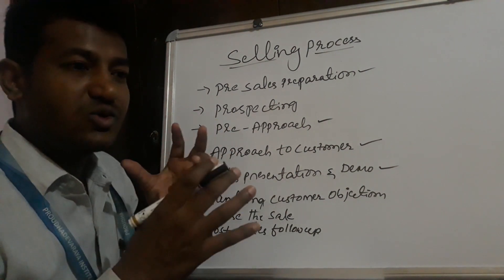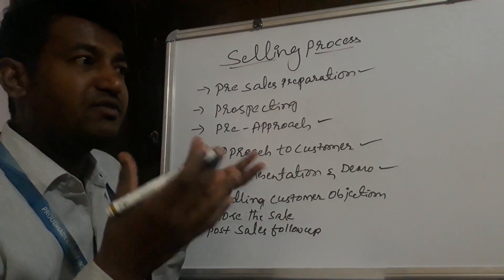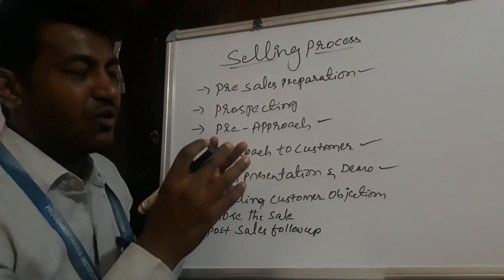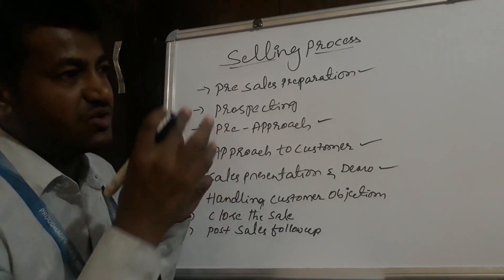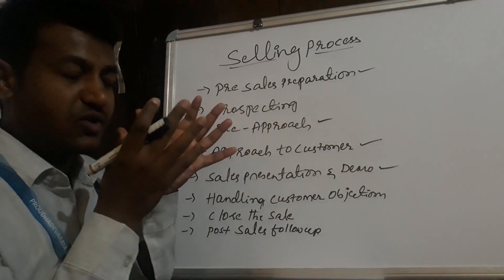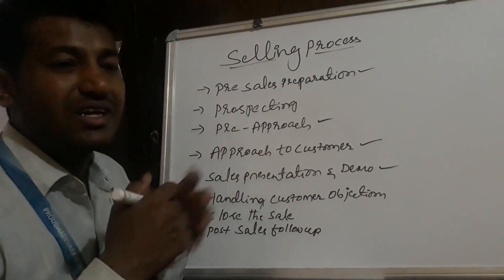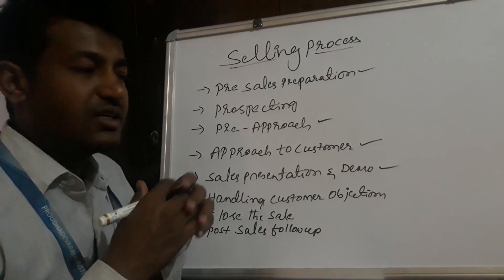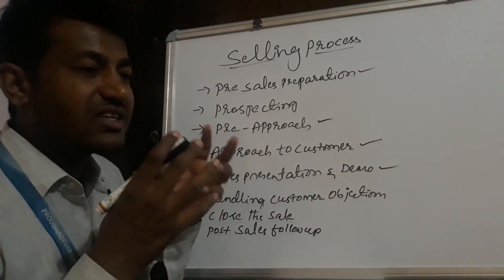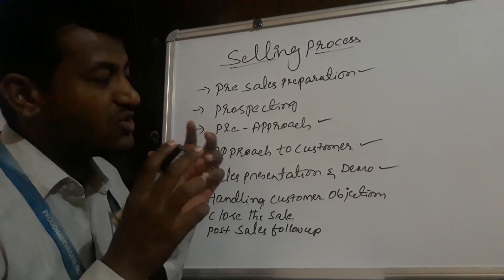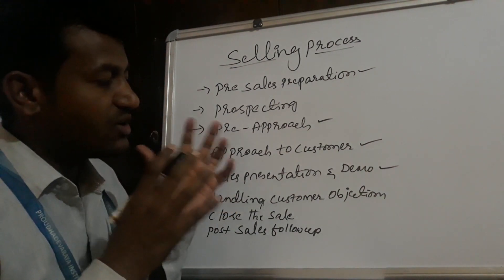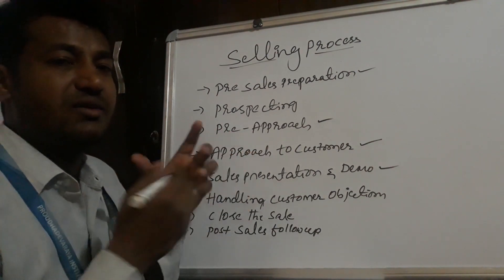Along with the sales presentation, you must also do a demonstration of the product. For example, if you are demonstrating a camera, you must show how it really works — the zoom, how pictures are taken, how far it captures good pictures and video. Show it impactfully to the customers with a demonstration of the product. That will really help get the customer's confidence. The reliability of the product is very important in selling. Reliability means whenever the customer needs to use the product, it should work whenever they want. When you show the demo properly, that will really add advantage to your selling process.